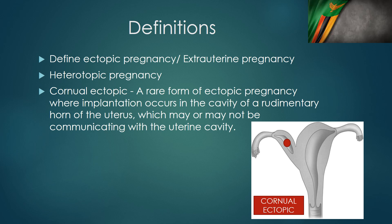An important clarification: many of us say 'cornual' when what we mean is 'interstitial pregnancy.' A cornual ectopic specifically means a pregnancy implanted in a rudimentary horn — for example, in a bicornuate uterus where the pregnancy implants in the rudimentary horn instead of the main cavity. That is what we should properly call a cornual ectopic.